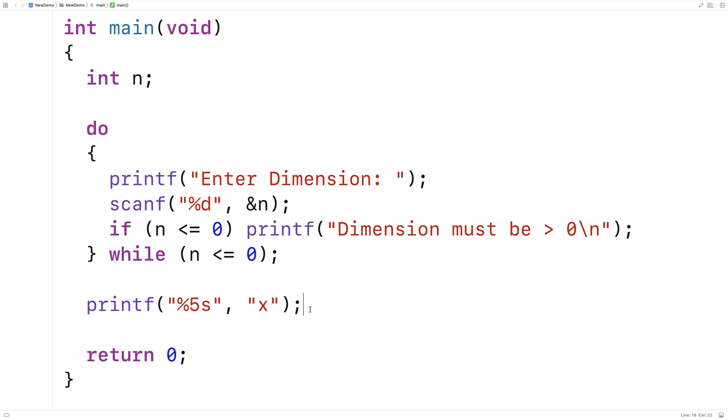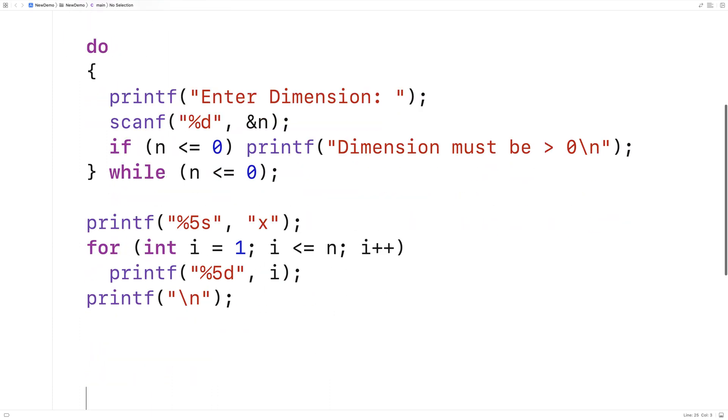Next I'm going to output the numbers from one to n and put those into five character width fields as well. Here I'll say for int i equals one, i less than or equal to n, i plus plus, and then we'll have printf %5d and output i. After we've done this we'll output a newline to end that first row of column headings.